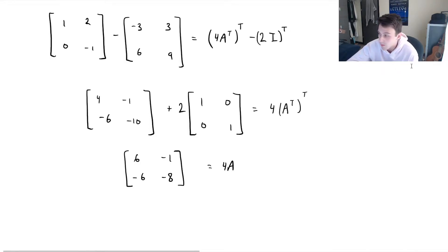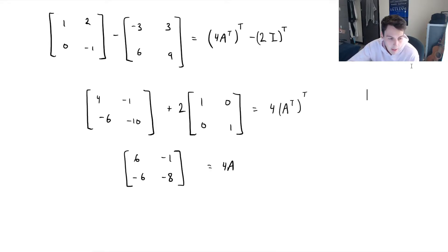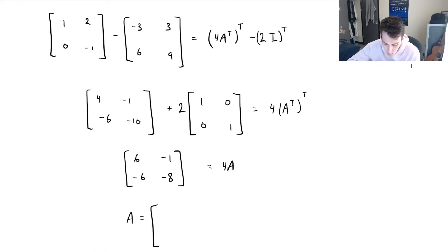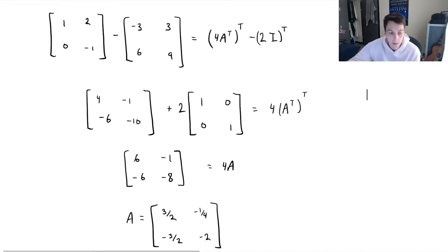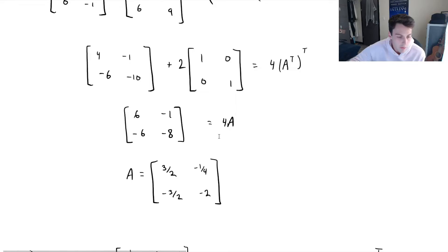Now we can divide by 4 on both sides, which is the same as multiplying the left-hand matrix by one quarter. So we can conclude that A is going to be: 6 divided by 4 is 3 over 2, negative 1 fourth, negative 3 over 2, and negative 8 divided by 4 is negative 2. So we are left with this as our answer for A — we've solved for A.